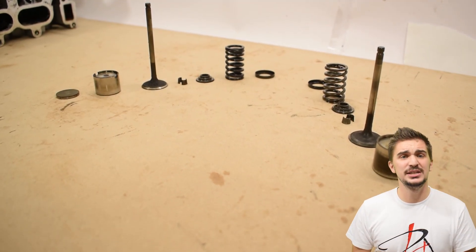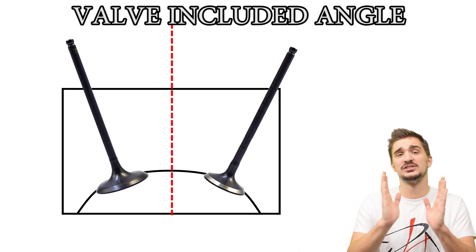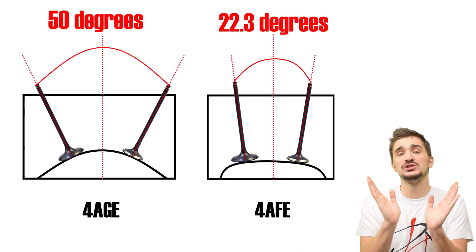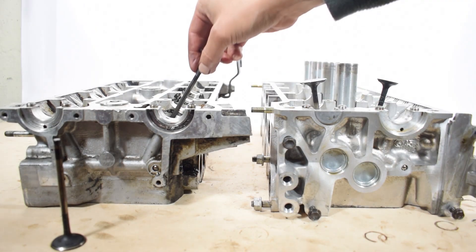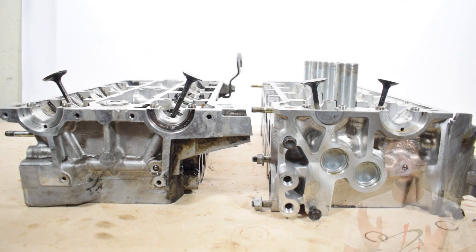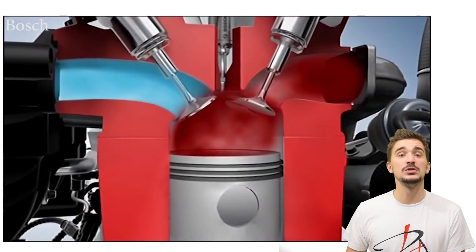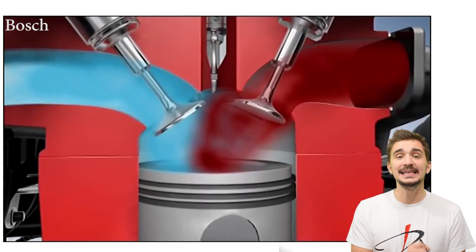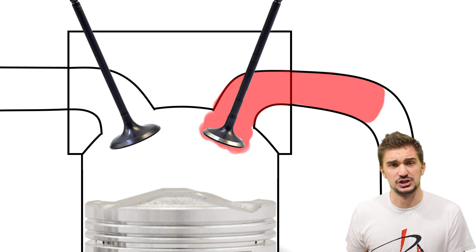But the key difference between these two engines isn't in the valves themselves or their sizes — it's actually in the valve included angle. The valve included angle is the angle of the intake and the exhaust valves against the cylinder head's centerline. The 4AGE features a wide valve included angle, while the 4AFE features a more narrow valve included angle. We can visually best see the difference between these two valve included angles if we pop the valves into the head the wrong way in. A wide valve included angle, in theory, favors something known as the scavenging effect.